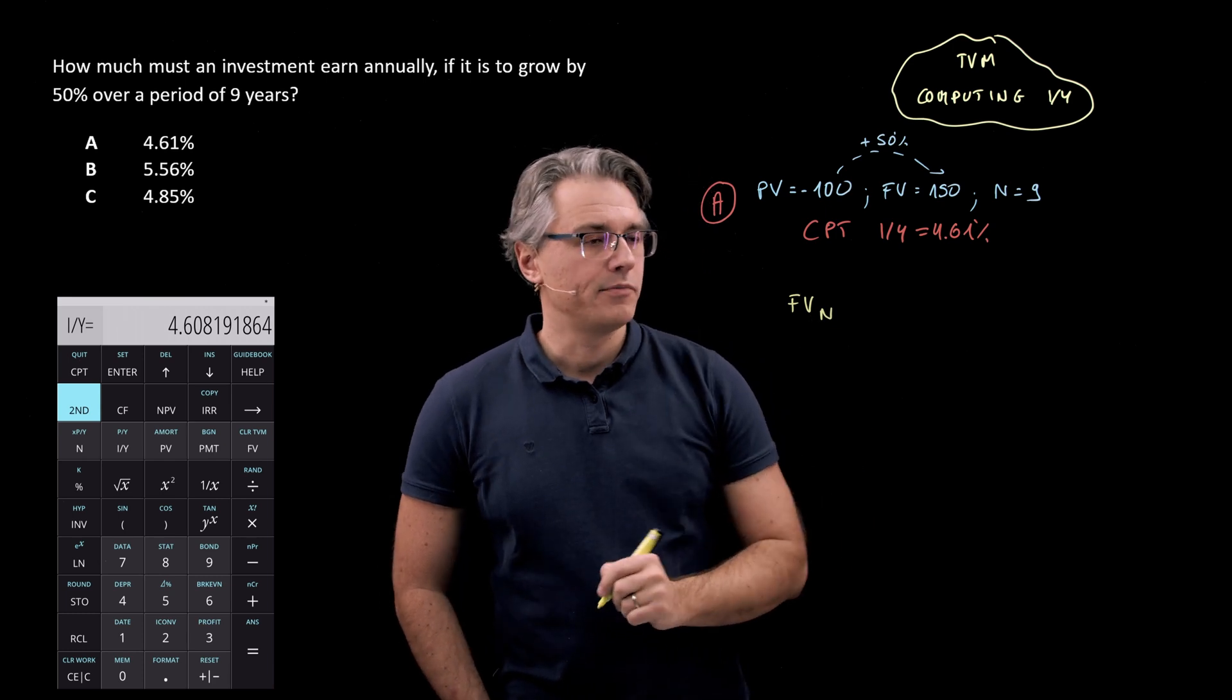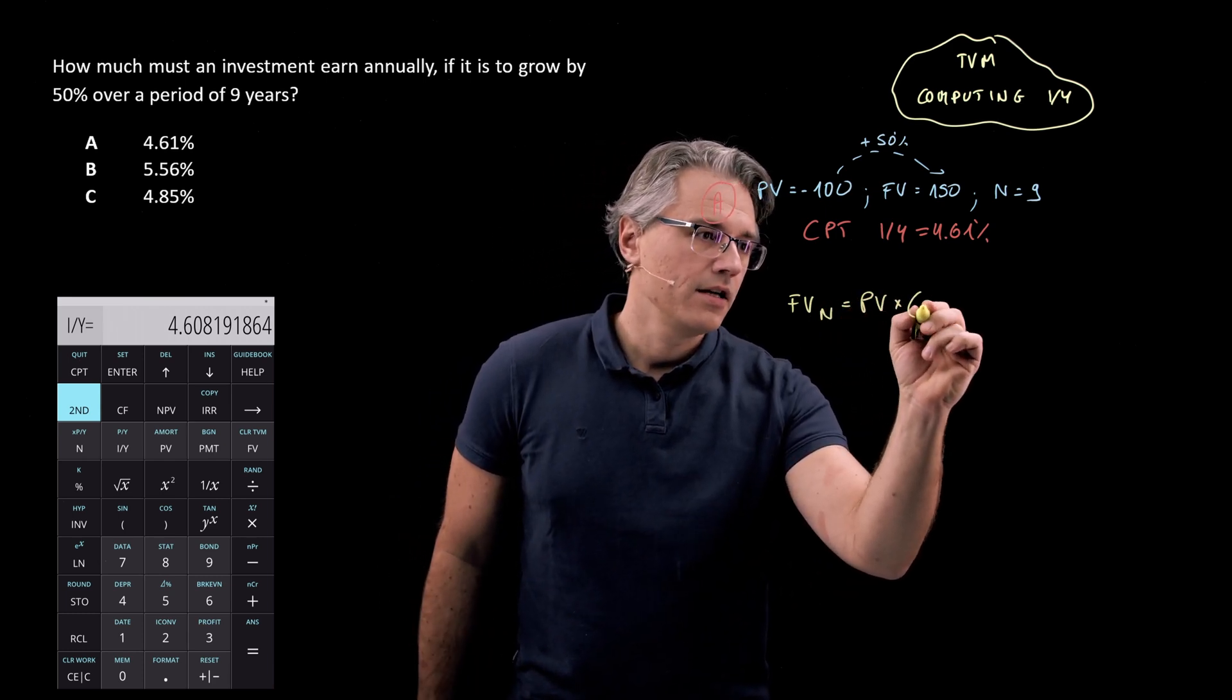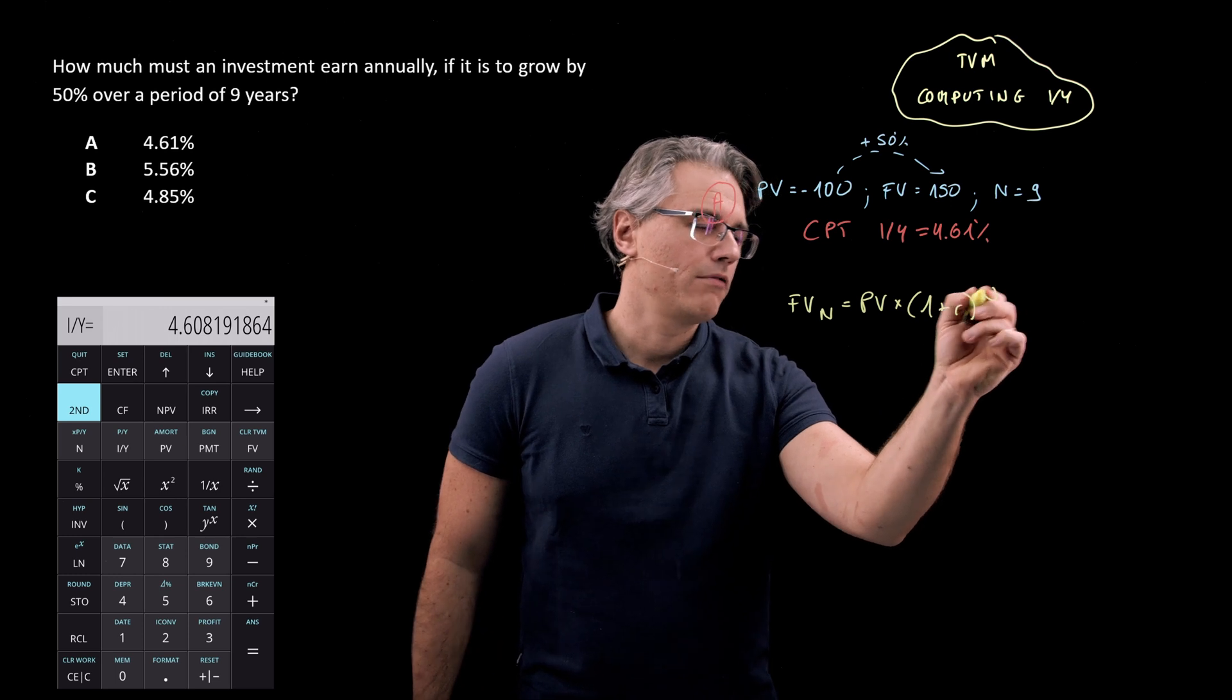FVN, the future value at point N, is equal to PV times 1 plus R to the power of N.